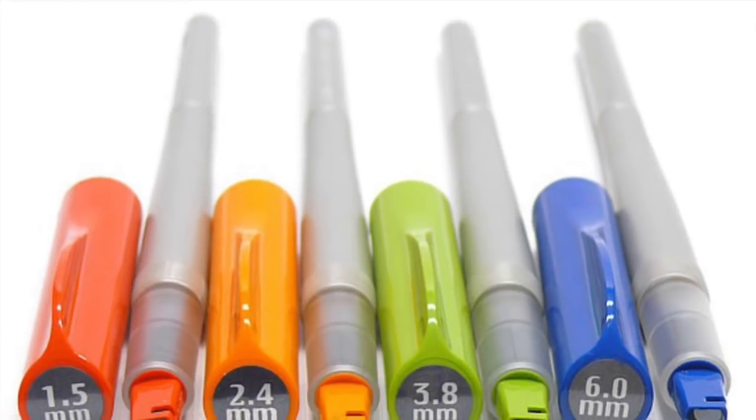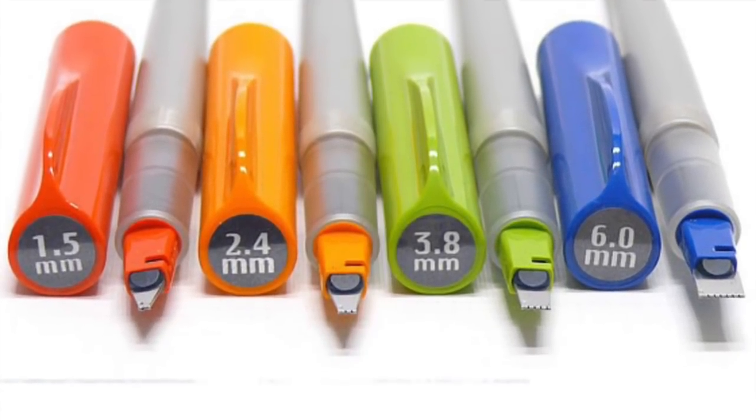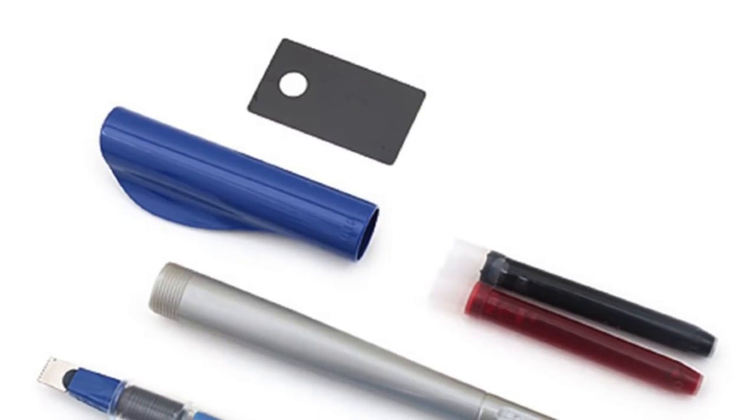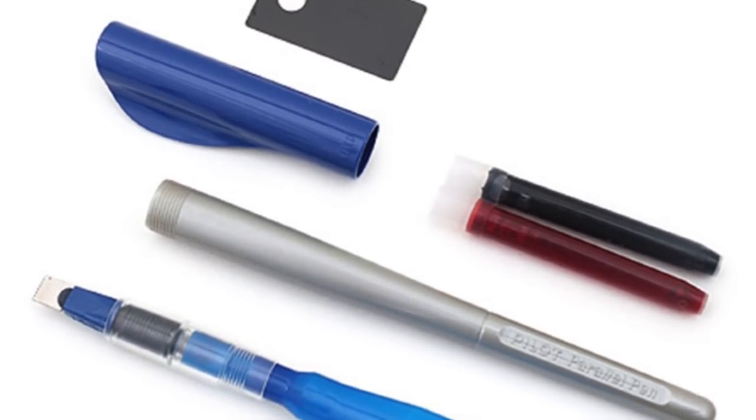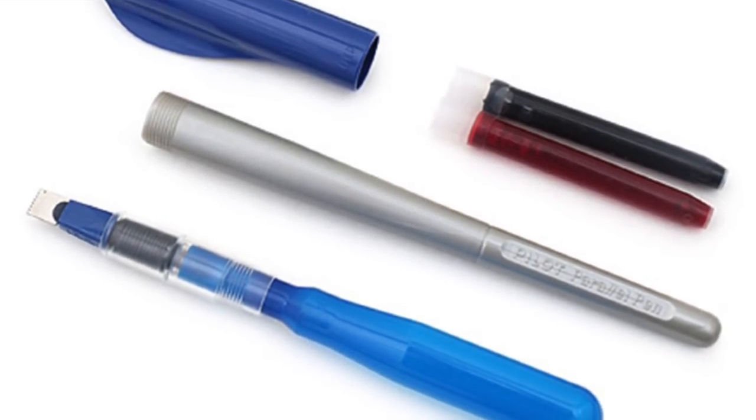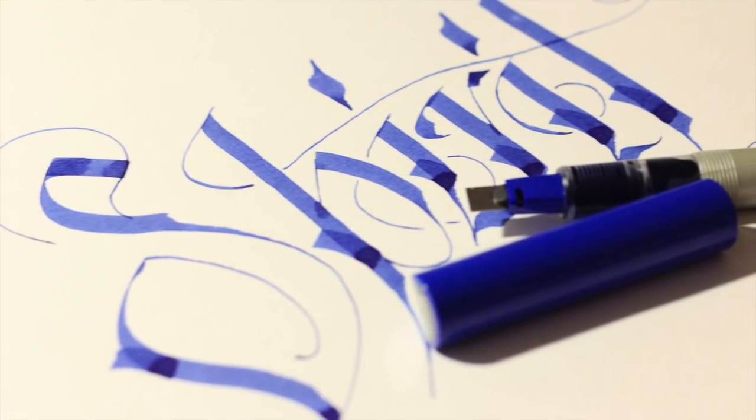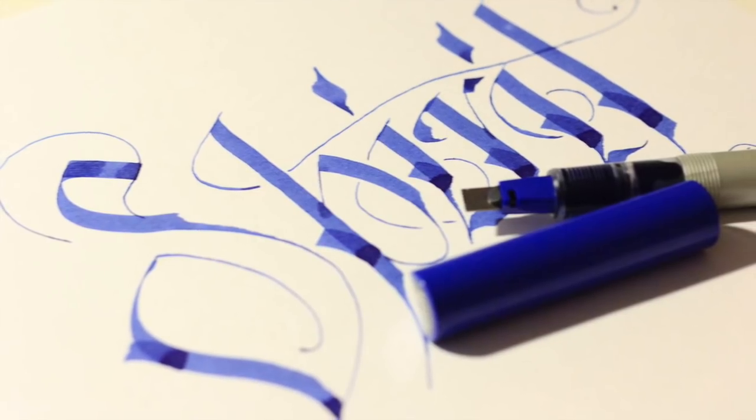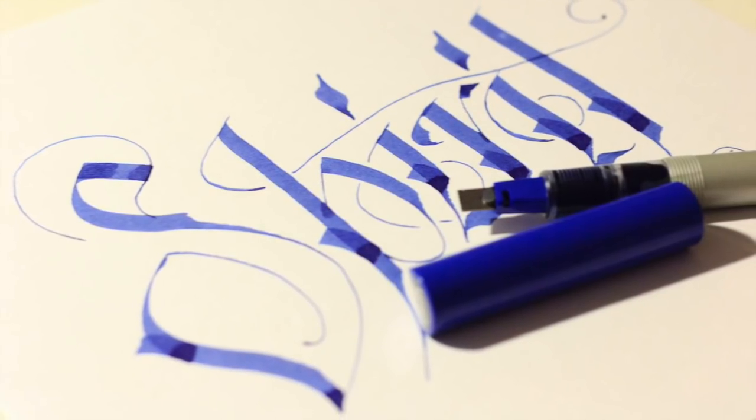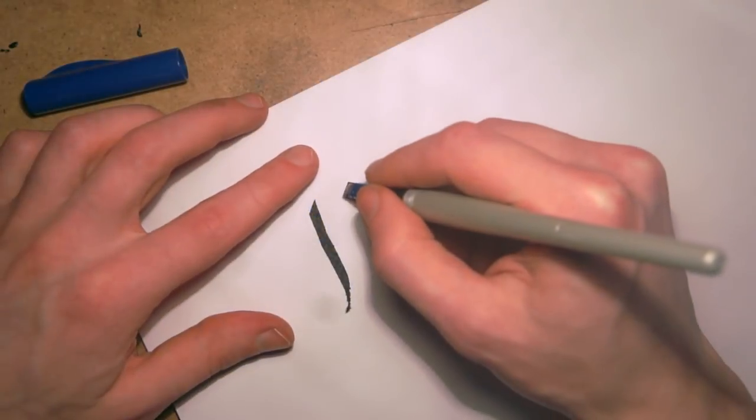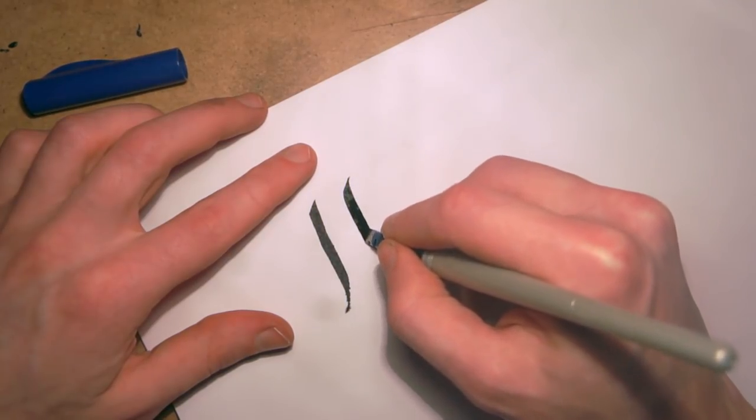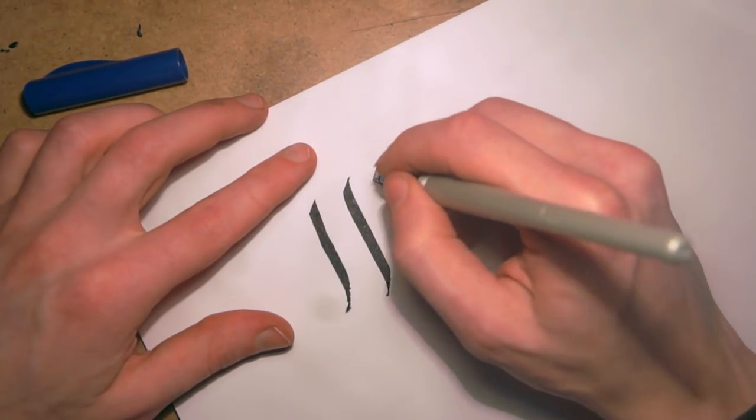Pen comes in 4 different sizes. It's recommended to start with the biggest 6mm blue cap and stick to it. This size will help you better understand proportions of letters than smaller nibs. You'll learn to make large strokes of different thickness.